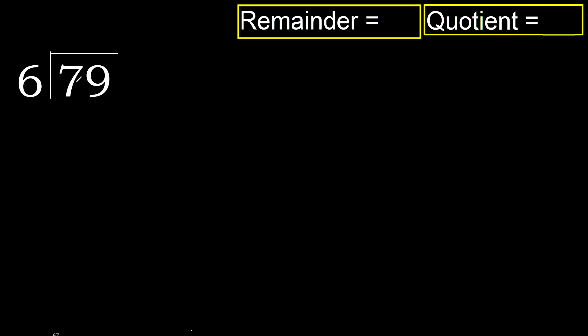79 divided by 6. 7 is not less, therefore with 7 — 6 multiply by which number is nearest to 7 but not greater? 6 multiply by 2 is 12, which is greater. Multiply by 1 is 6, which is not greater. Subtract: 1.